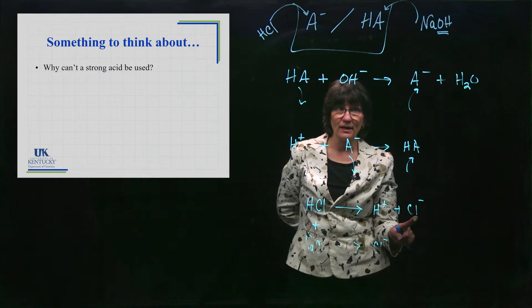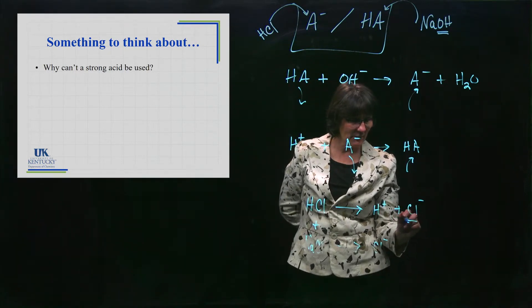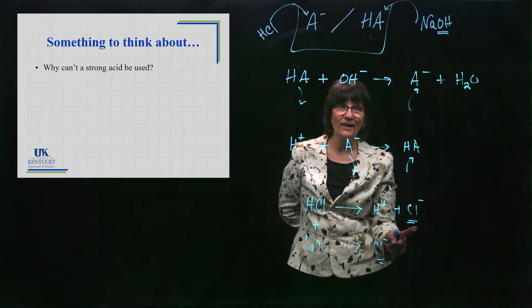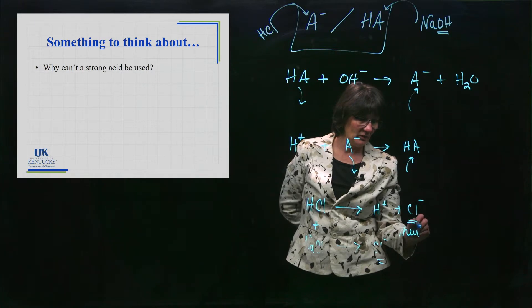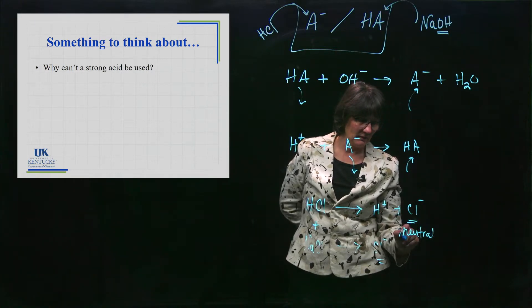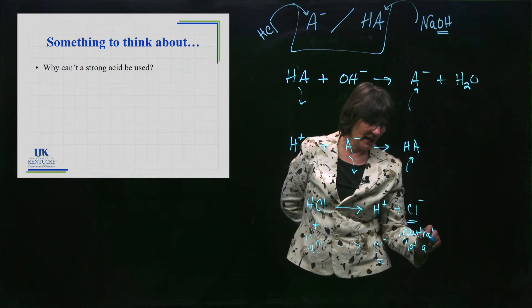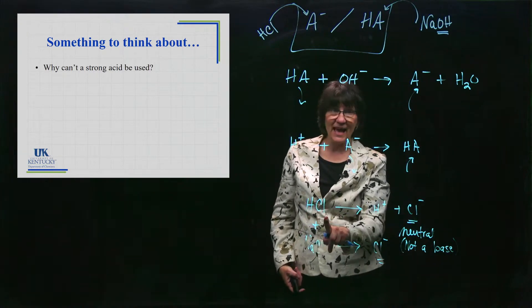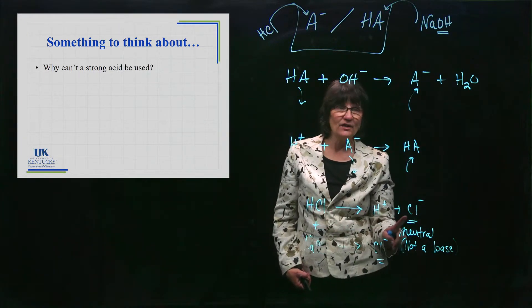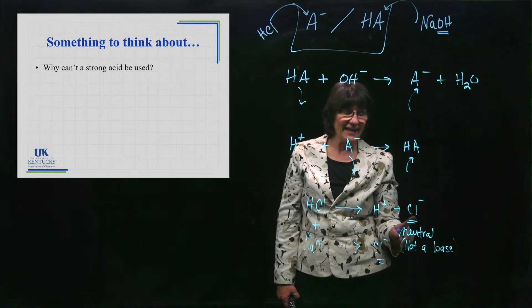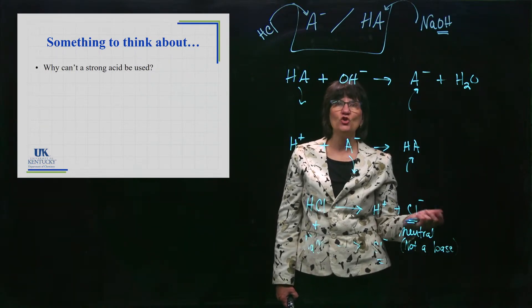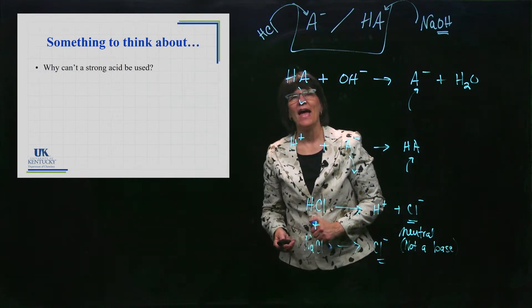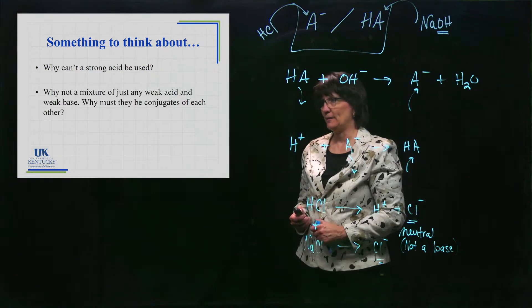This is a conjugate base right there. We have this guy right here. We have a base. But it is the conjugate base of this guy. It is so weak that it is neutral. It really isn't basic. So it is not a base. While we give it the title of the conjugate base of this acid, and that is true, it is so weak a base that it is neutral. It cannot pick up a proton. It cannot neutralize any other added acid. And that is why you must have a weak acid and its conjugate base in there.